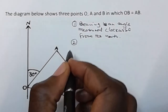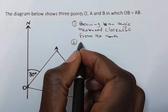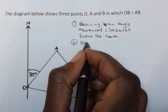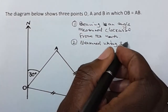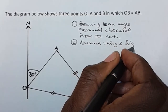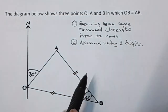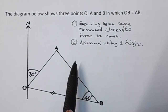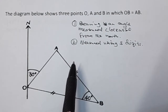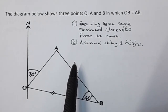Number two, you need to know that bearing is measured using three digits. This is also very important. If you calculate the bearing and you find that the bearing is 60 degrees, that 60 degrees is an angle. But to show that it's a bearing, you are supposed to say 060 degrees.